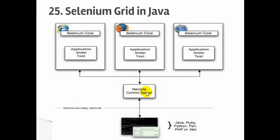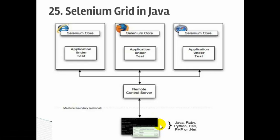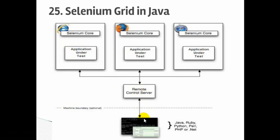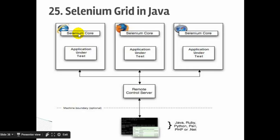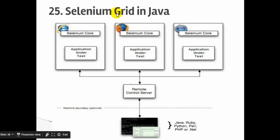Depending upon the desired capabilities that you have set up in your code, the hub will select the appropriate node and start execution on that particular node. For example, if you set the desired capabilities with browser name as Internet Explorer, the hub will select that particular node. If you want to run on Firefox with Firefox desired capabilities, the hub will select the node that has Firefox installed. One node can have multiple browsers set up at the same time, but only one session can be created between hub and node at a time.